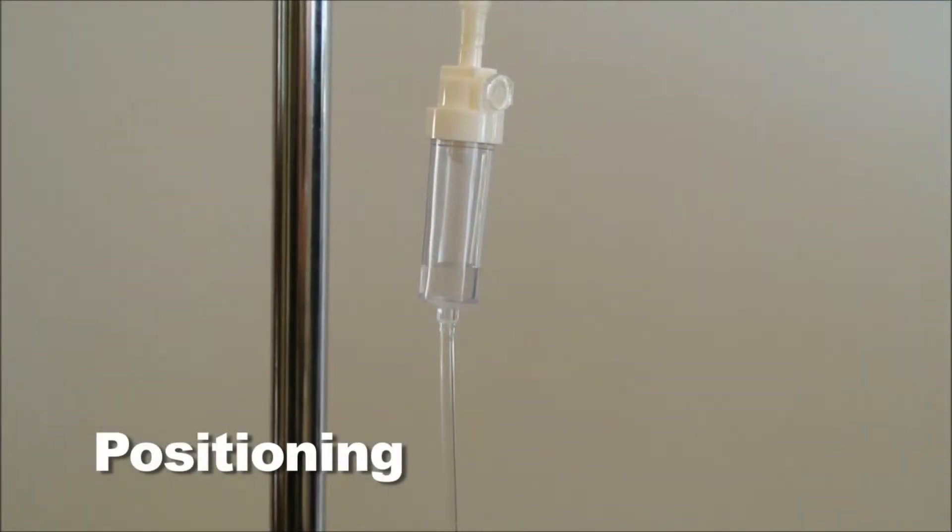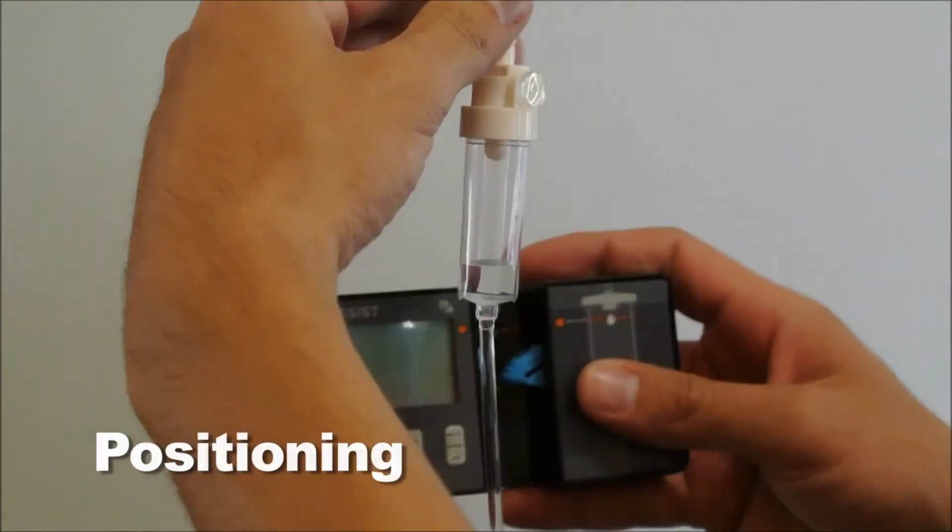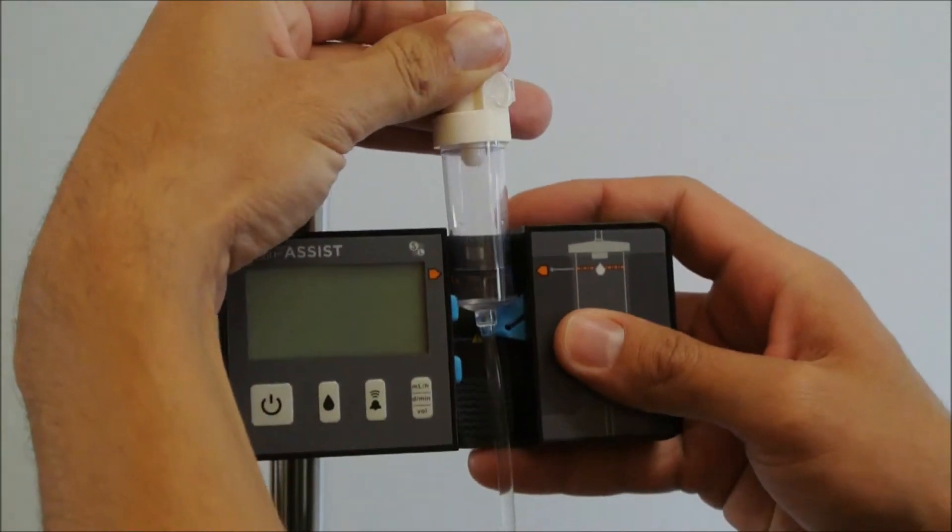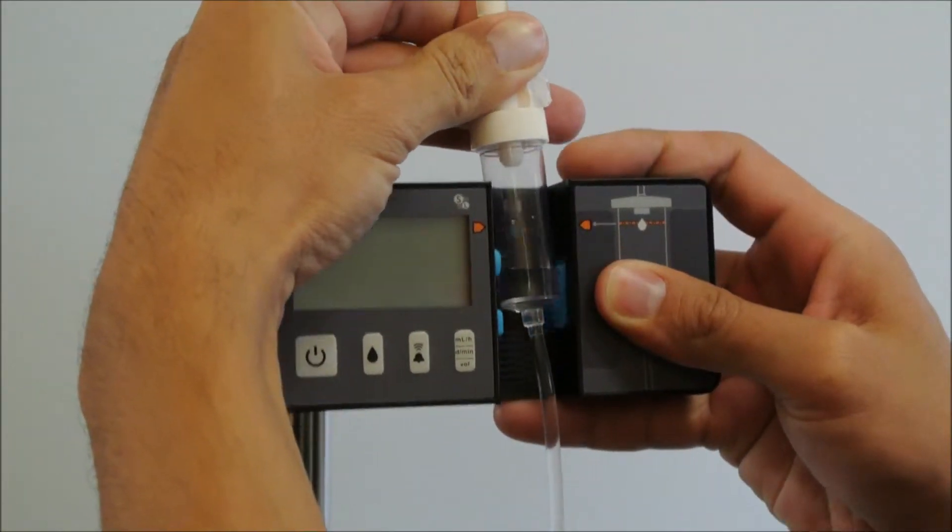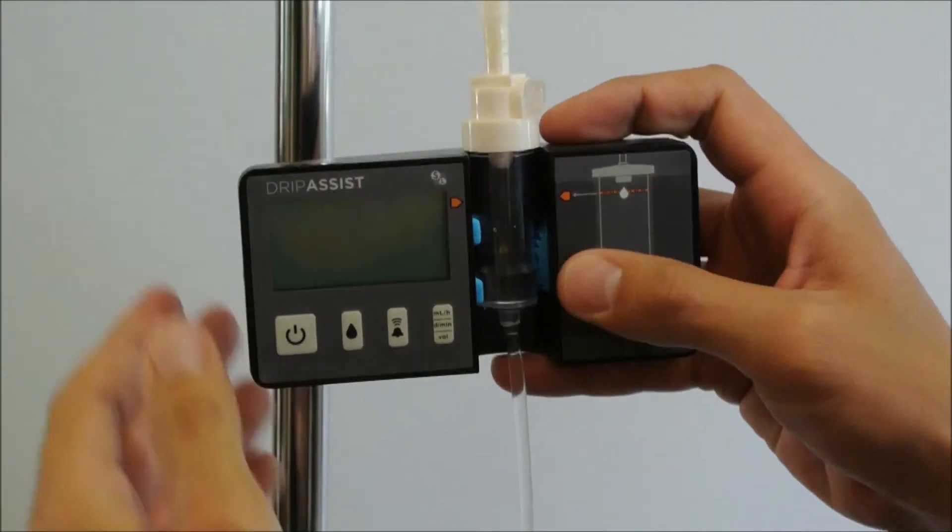To position your drip assist, place it below the drip chamber and slide it upwards from the base. The blue cam on the right will rotate downward and spring back to hold the device in place.